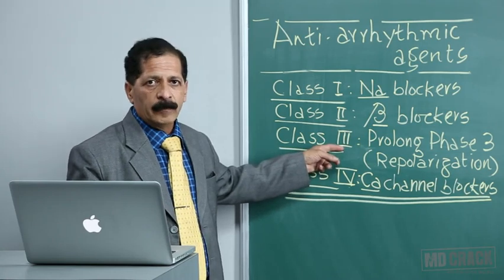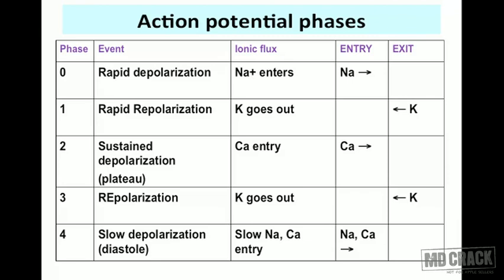During phase 4 there is slow entry of both sodium and calcium, producing slow depolarization that corresponds to diastole. So to summarize the table: phase 0 — sodium entry; phase 1 — potassium exit; phase 2 — calcium entry; phase 3 — potassium exit; phase 4 — sodium and calcium entry.